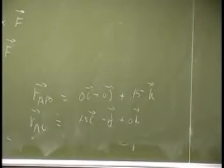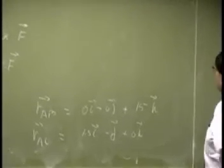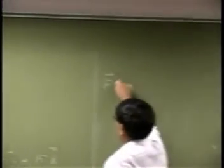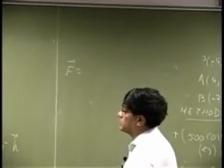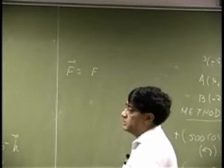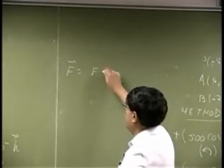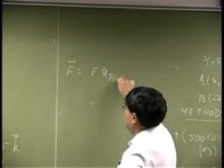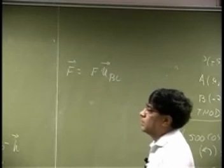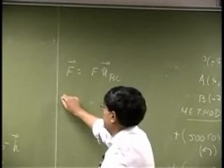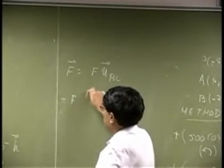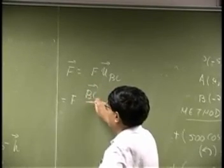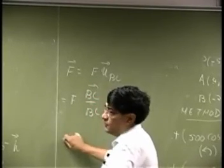Then we need the force vector F. In this particular case, it is going to be the force magnitude and we are looking at our unit vector going from P to C. So, that could be written as F vector BC over the length of BC.